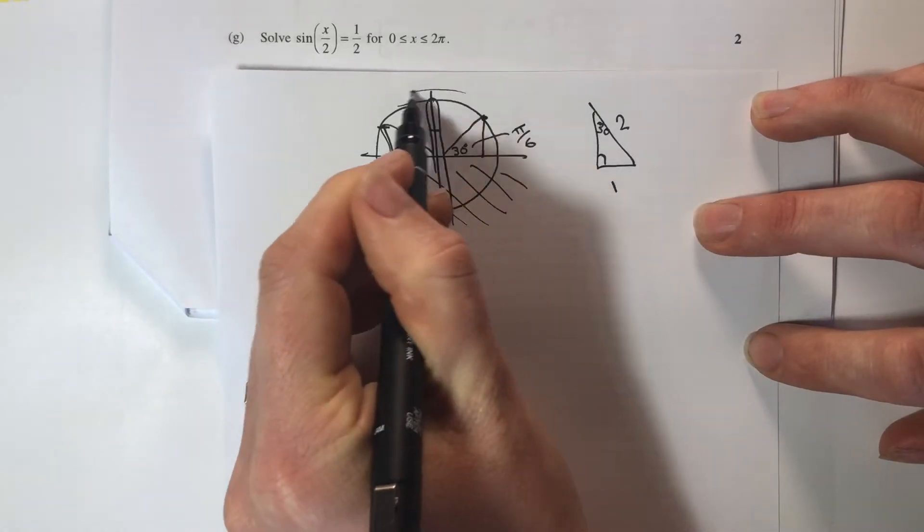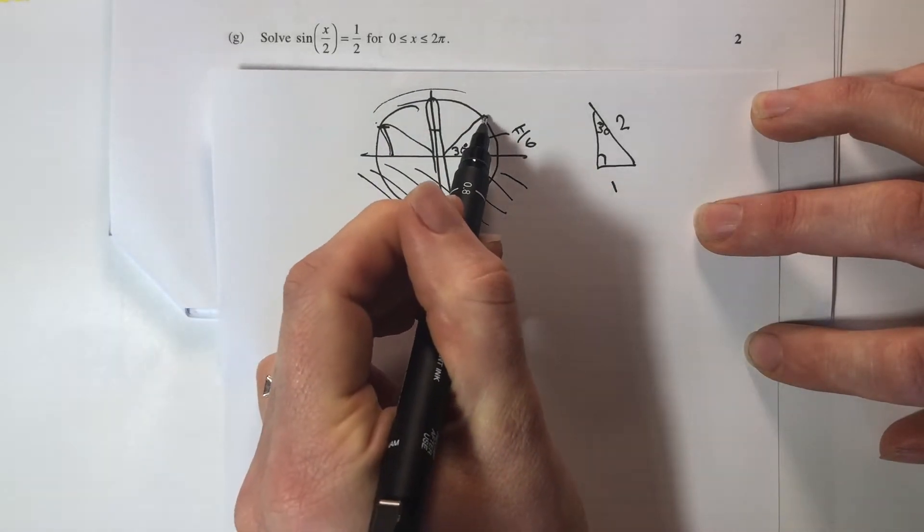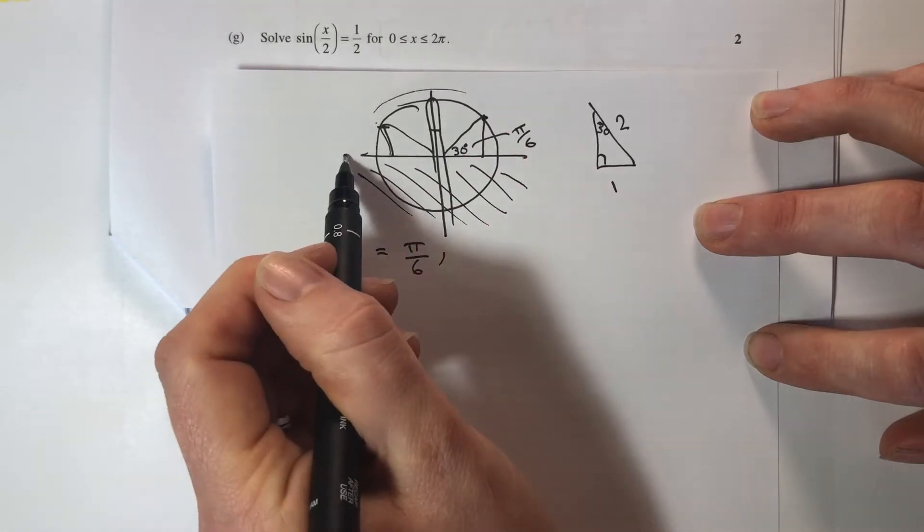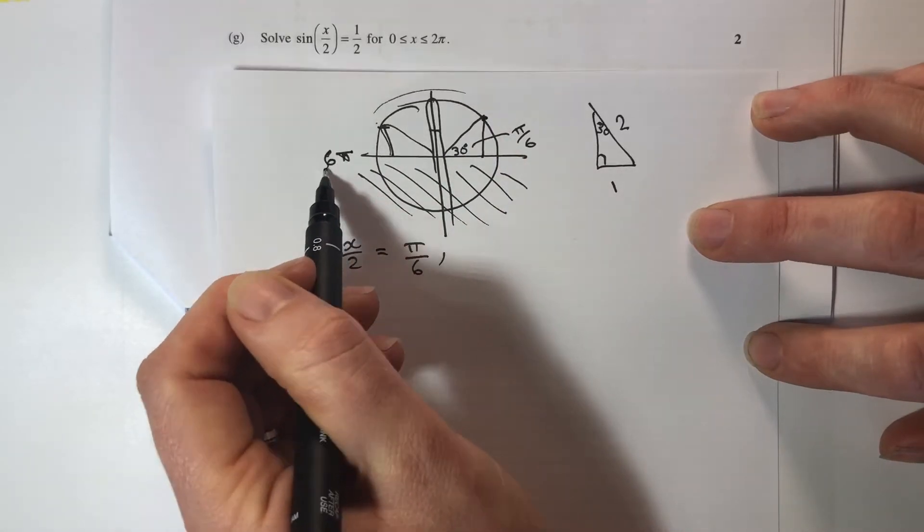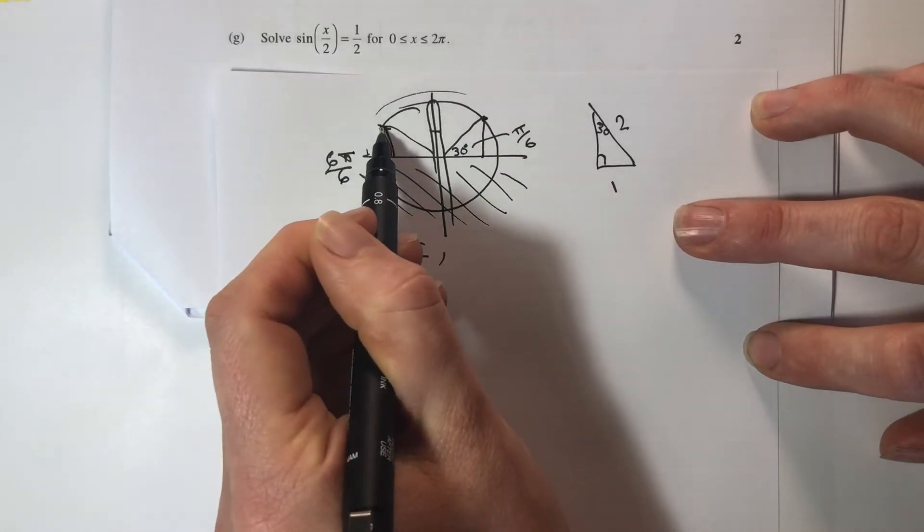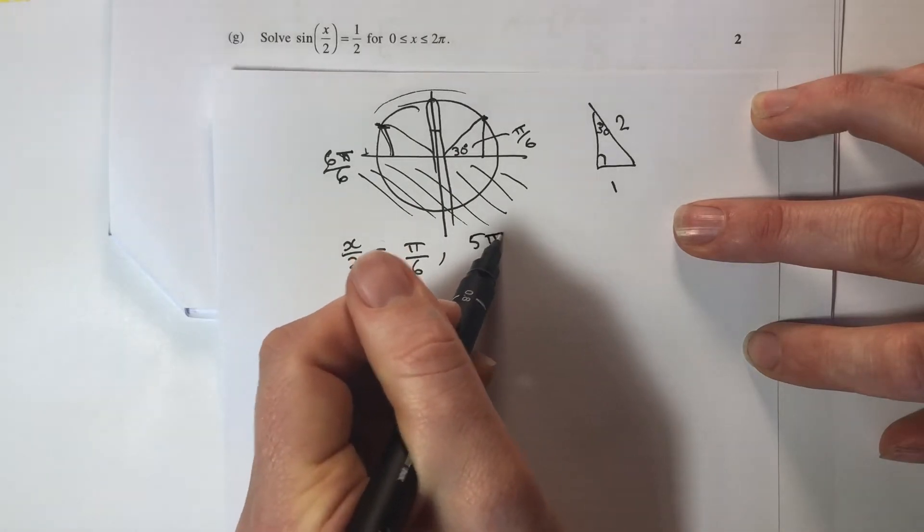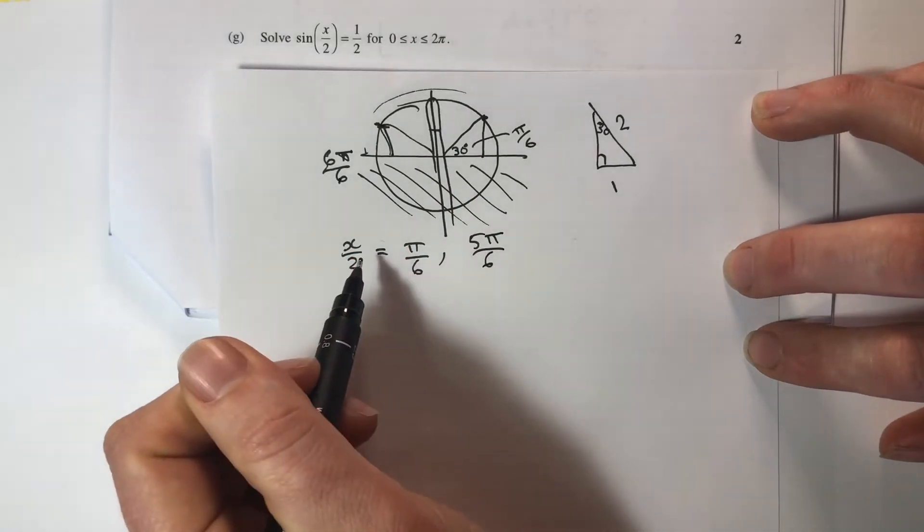And my second answer would be around and back again, which if that's π on 6 and this is π, then this would have to be 6π on 6. So this here would be 5π on 6 to be 1 back. That's x on 2.